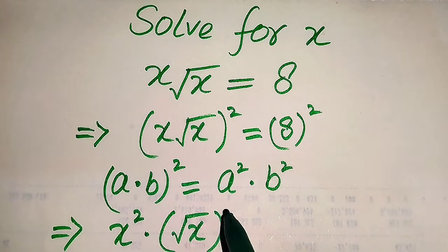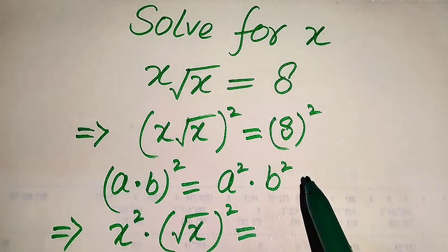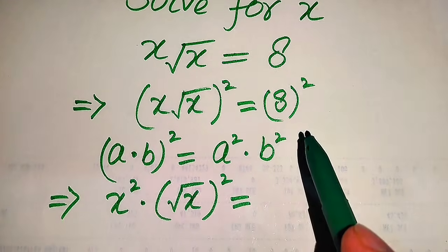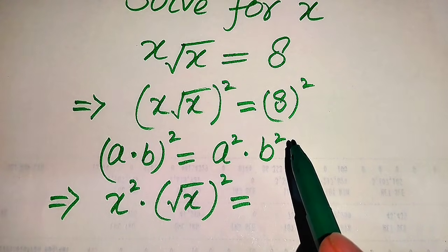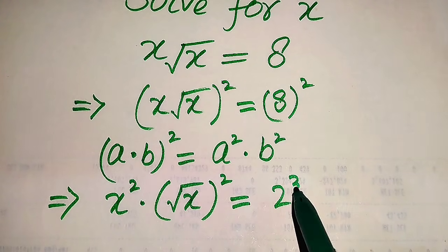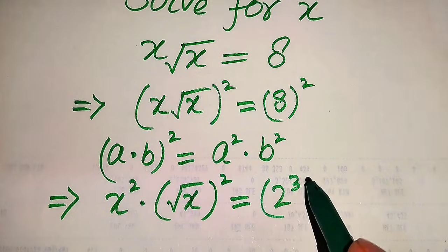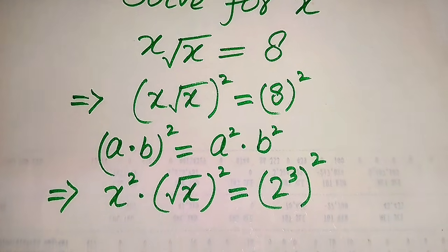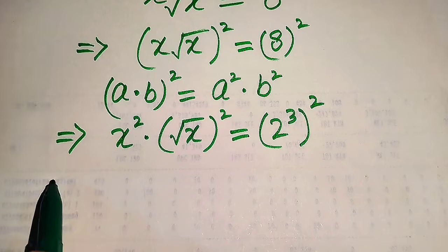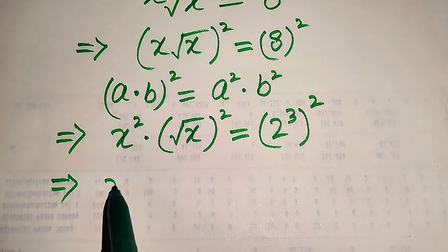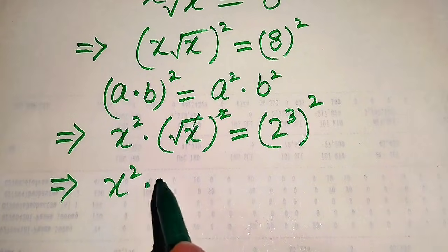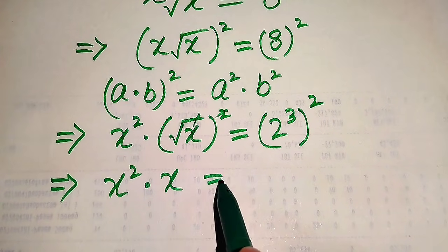So (√x) whole squared equals x, and on the right hand side we write 8 in prime factors form. The prime factors of 8 are 2 cubed. Its whole square gives us after simplification: x² × x, because the square root and the square cancel, leaving us x only on that side.